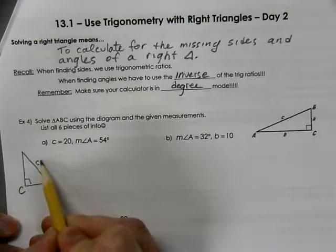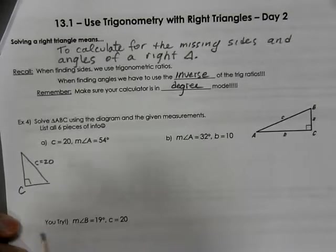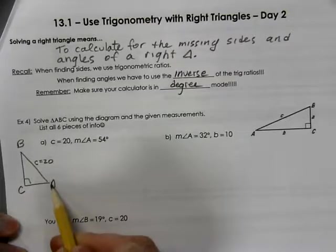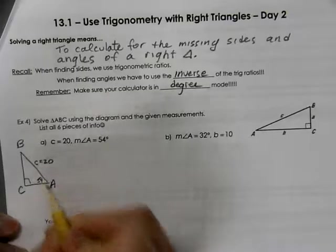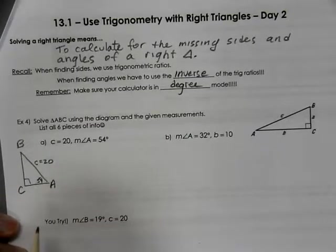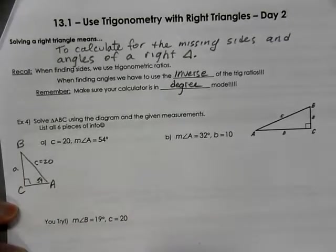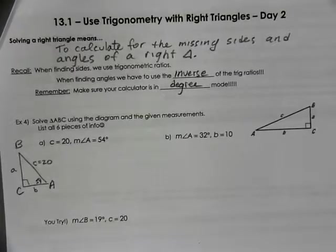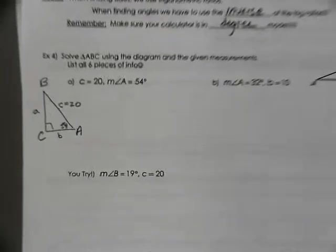Side C is going to be the hypotenuse. Angle A is supposed to be 54 degrees, so I made A my larger of the two angles. Side A is going to be opposite that. Side B is going to be opposite angle B. So now we have to calculate what our missing sides are and missing angles.